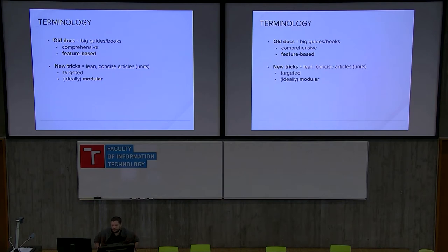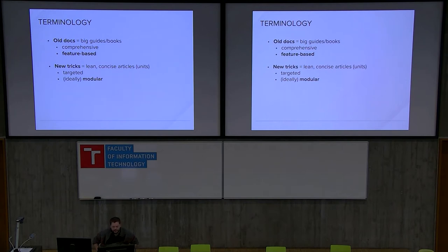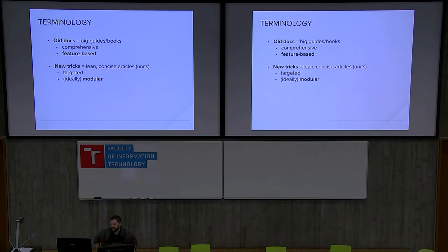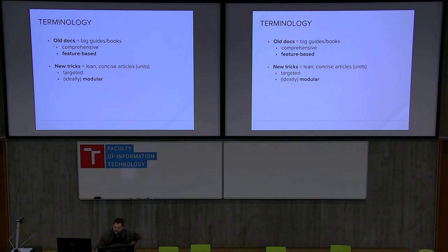To get around some of those problems, the new documentation — or documentation that new tricks have been applied to — is the opposite. It does not strive to be complete and comprehensive. Instead, it tries to be as targeted and specific as possible. It's very lean and concise, not grouped into big books or guides. Instead, it is presented as very short, to-the-point articles or units that each try to solve a specific problem, answer a question, or describe how to get towards a specific goal.